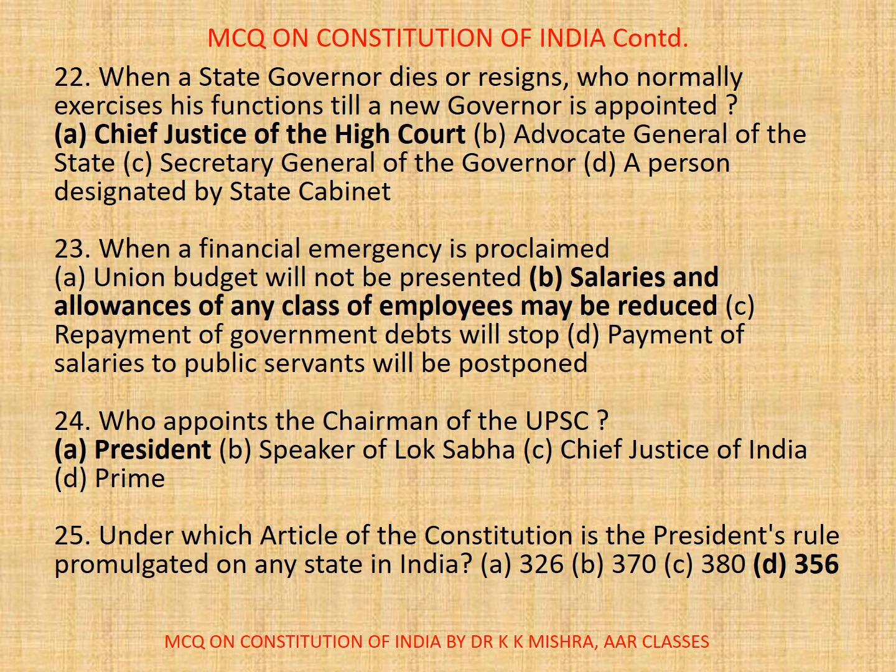Question number 22. When a State Governor dies or resigns, who normally exercises his functions till a new Governor is appointed? a) Chief Justice of the High Court, b) Advocate General of the State, c) Secretaries of the Governor, d) A person designated by the State Cabinet. Correct option is a) Chief Justice of the High Court.